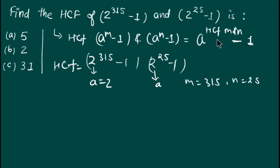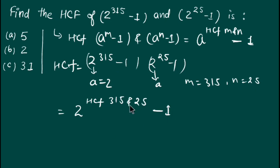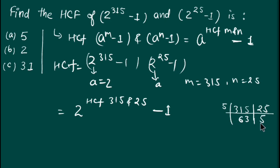So the HCF is 2 to the power HCF(315, 25) minus 1. Now we need to find HCF of 315 and 25. Dividing both by 5: 315 ÷ 5 = 63 and 25 ÷ 5 = 5. Now 63 and 5 are co-prime, so there are no common factors. Therefore, 5 is the HCF of 315 and 25.